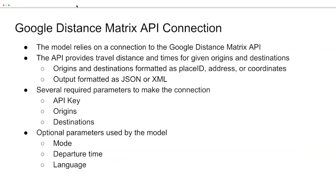Our model relies on a connection to the Google Distance Matrix API, which provides travel distance and times for given origins and destinations — returning the time in minutes from one location to another. Origins and destinations can be formatted as a place ID, address, or coordinates. We used street addresses because they are easiest to hard code. We used the same inputs as both origins and destinations, and the output can be formatted as JSON or XML. We chose JSON because it is easier to extract information from.